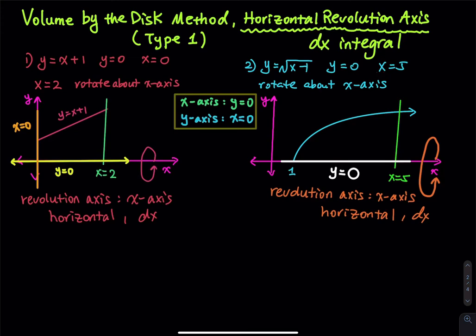Let's do these two volume problems using this method — Type 1. We are going to use a horizontal revolution axis and the integral is going to be a dx integral. A horizontal revolution axis means you rotate the entire area about the x-axis. The x-axis is a horizontal axis, so that is why we call this a horizontal revolution axis.